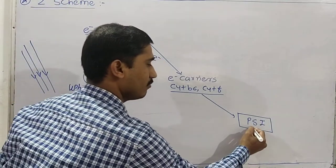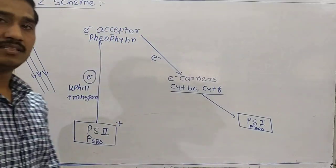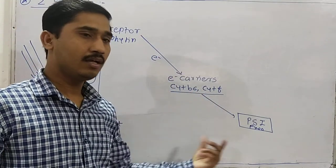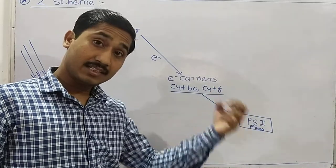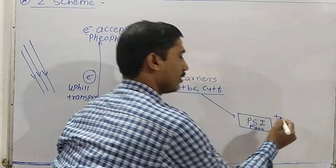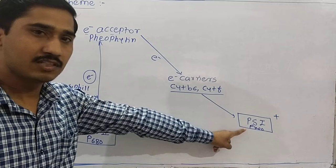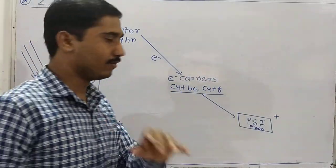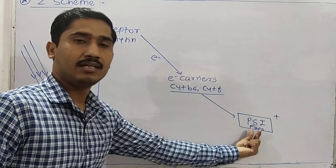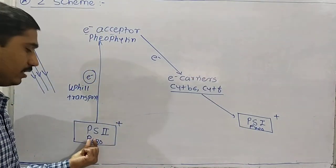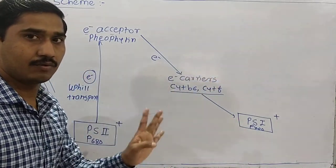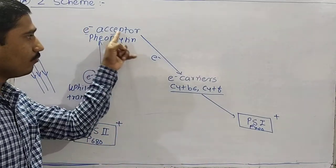Photosystem I is nothing but P700, or chlorophyll a 700. When light of wavelength 700 nanometers is absorbed, P700 becomes excited and repels an electron, just like PS II. At the same time, light of 680 nanometers is received by P680 and light of 700 nanometers by P700 — both molecules repel electrons simultaneously.